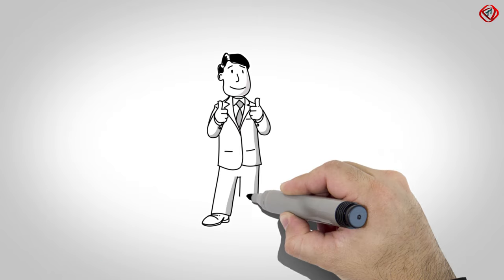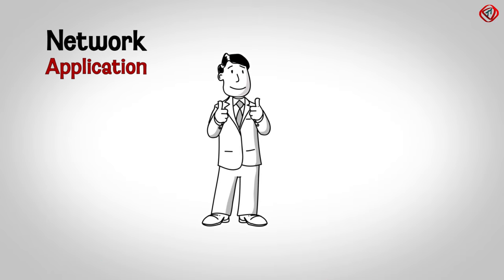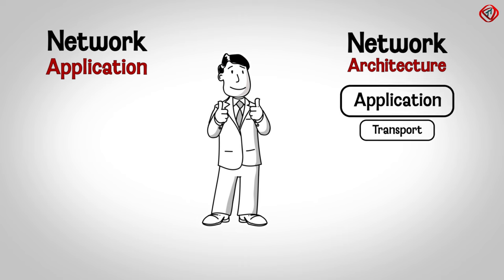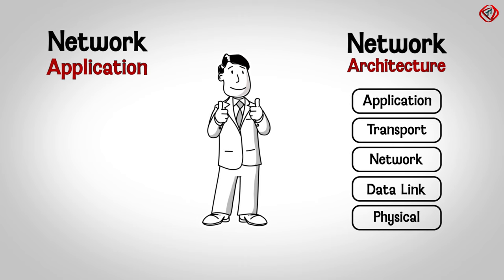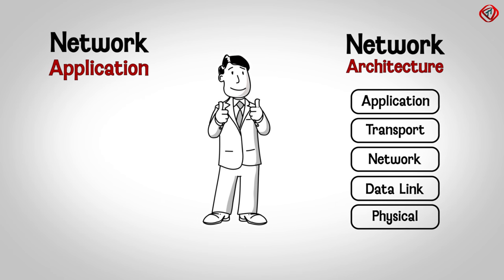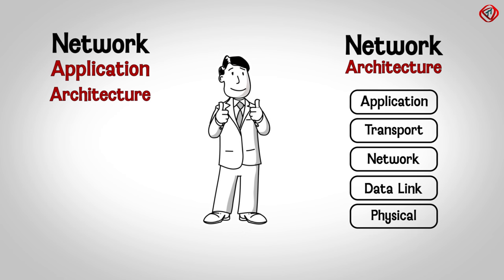As an application developer developing a network application, the network architecture is fixed and consists of 5 layers — you do not have control over this architecture. However, you have control to decide which network application architecture to use for your network application. There are two types of network application architectures: client-server architecture and peer-to-peer or P2P architecture.